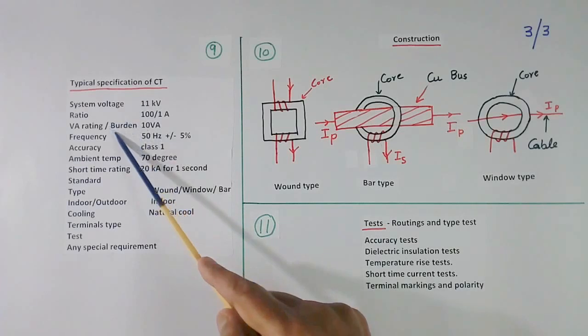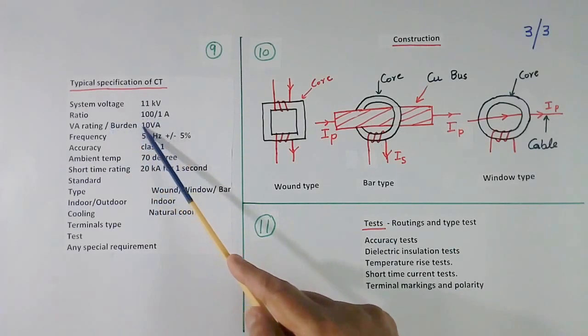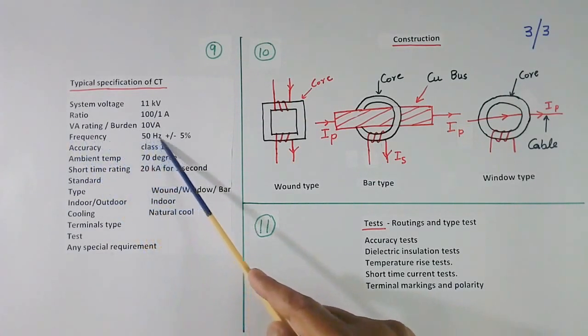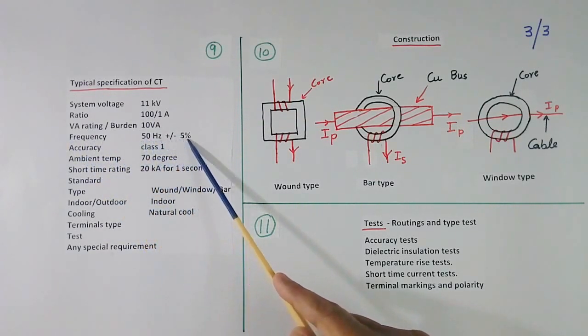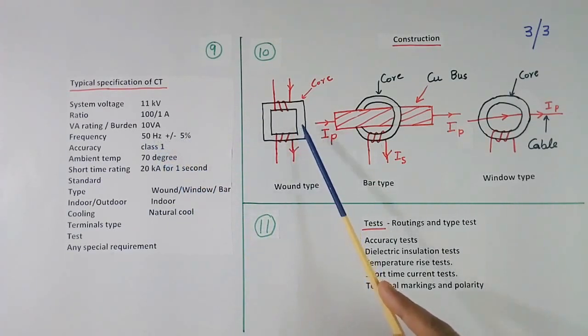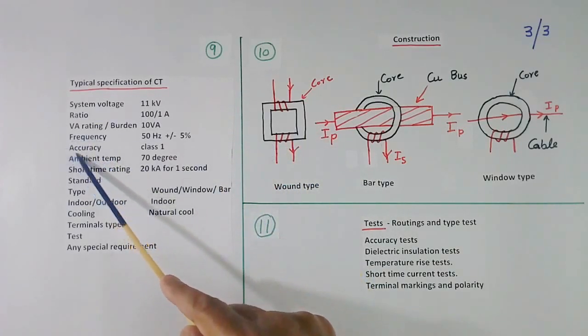Then we should know VA rating. This is called burden also. 10 VA I have written here. Then we have to tell frequency also, 50 Hz plus tolerance also. Lower the frequency, bigger the size of the core will be.